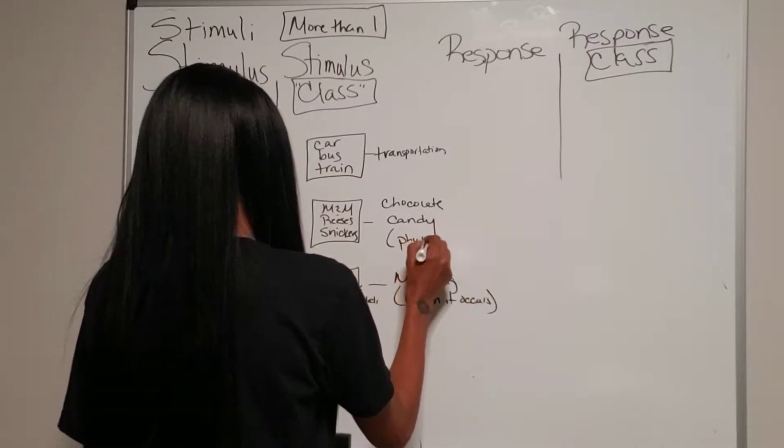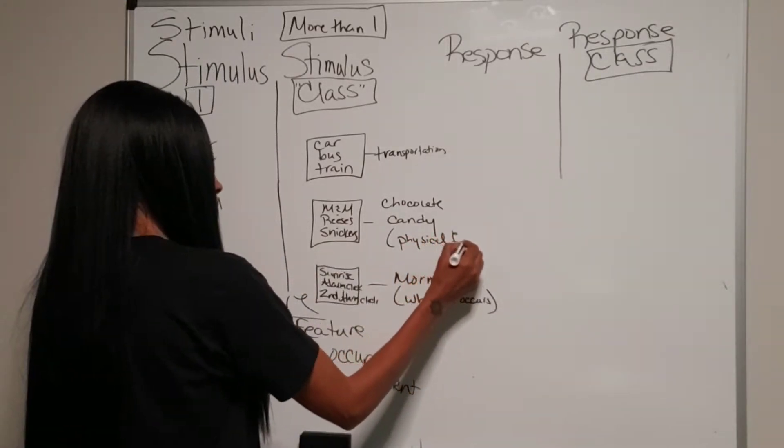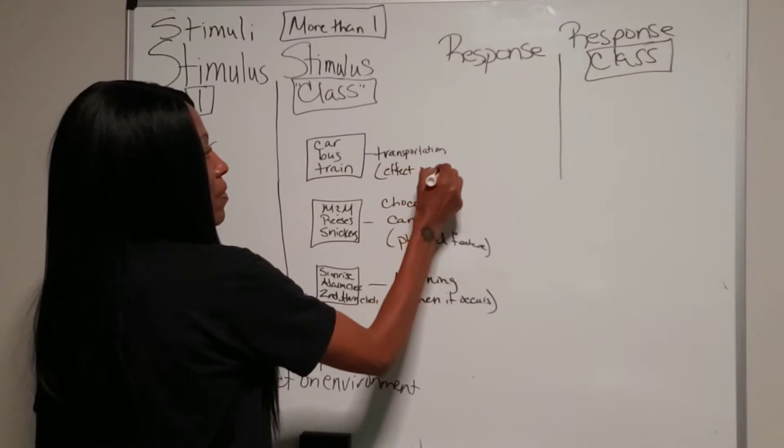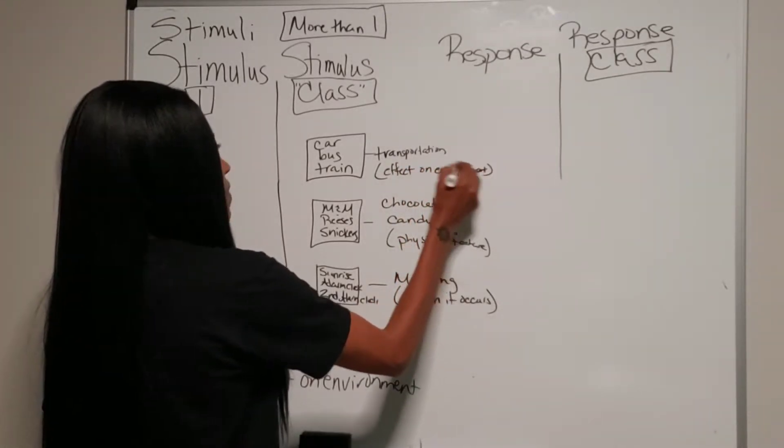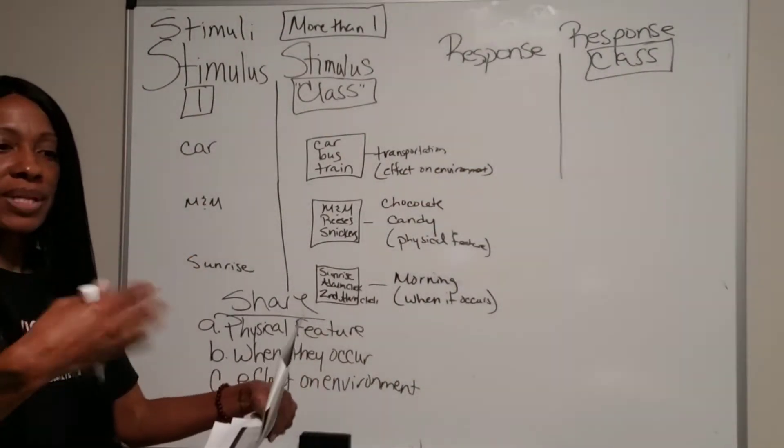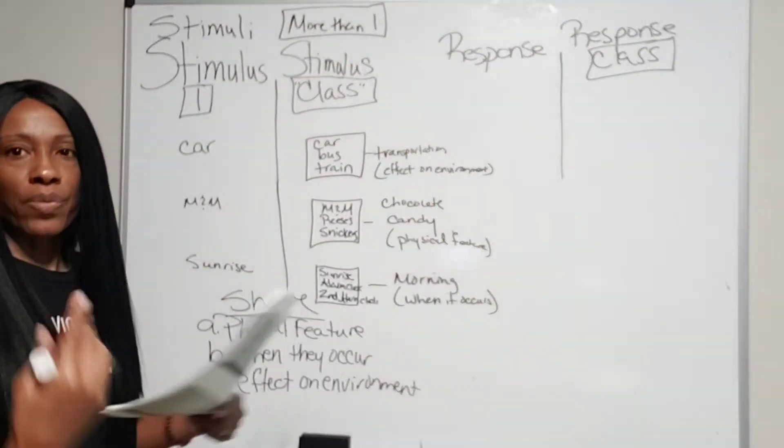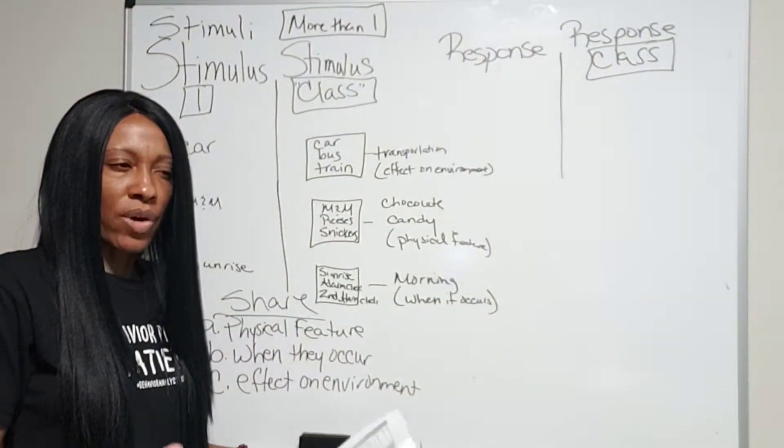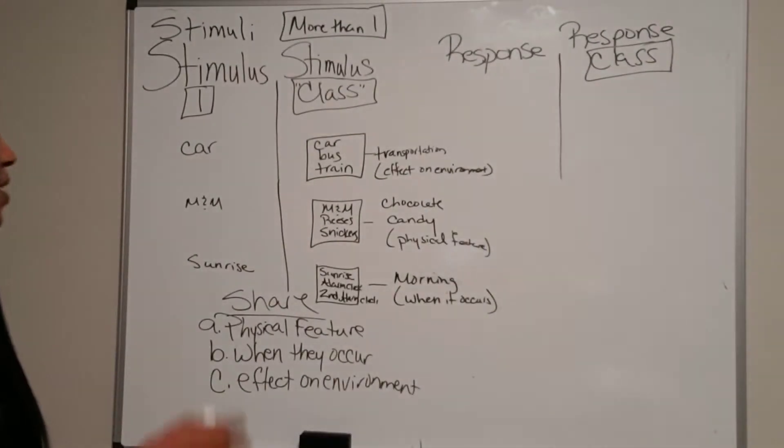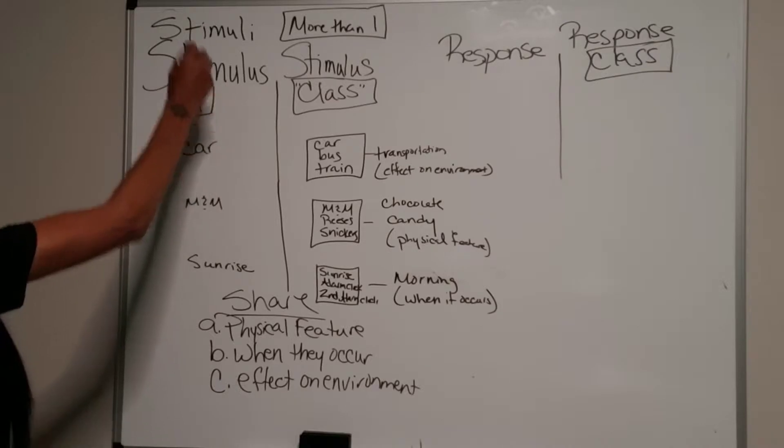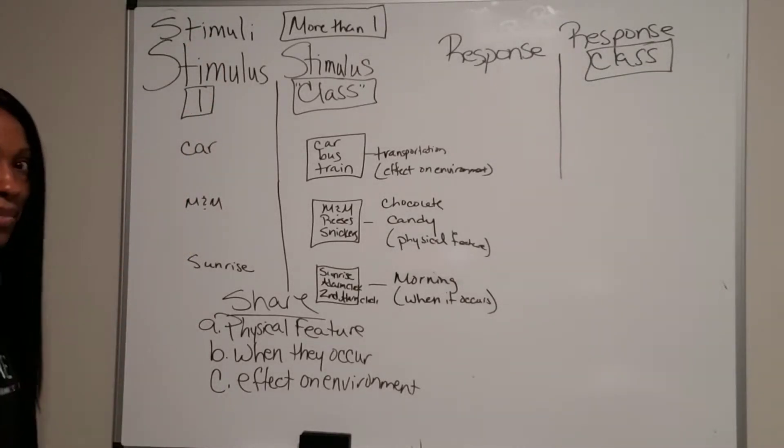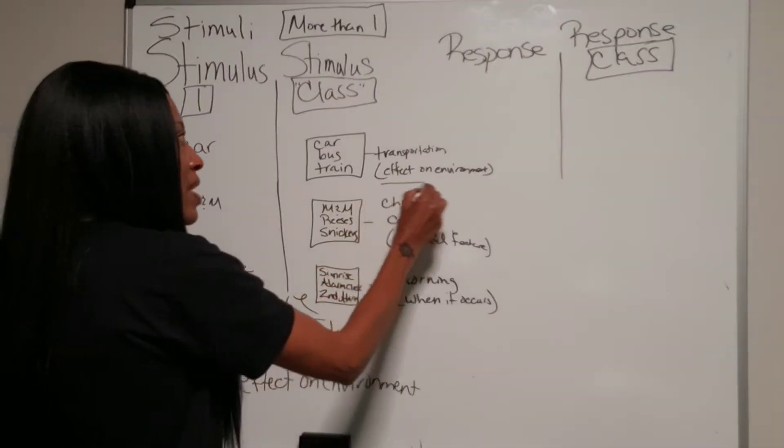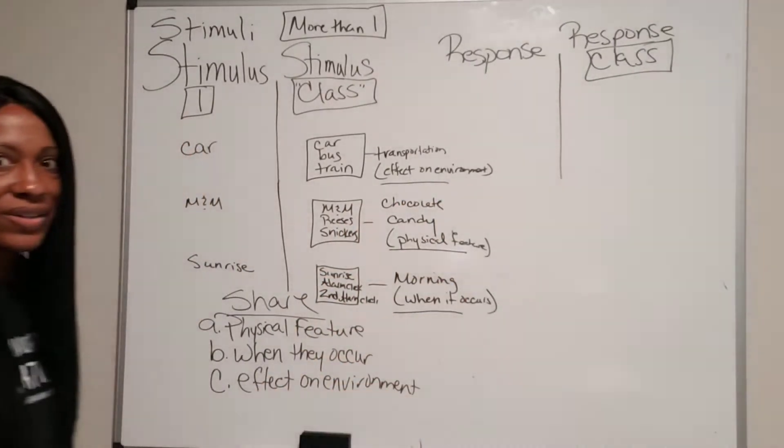All this similar stimuli shares the same physical feature. And this is the effect it has on your environment, it's talking about you, your environment, or basically what you would normally use it for, or what it would cause you to do. So here, remember, if it's one stimulus or stimuli, it's talking about one individual stimulus. If it's a class, you're going to have the multiple stimulus, but they're going to either have the same effect on the environment, the same physical feature, or when it occurs.